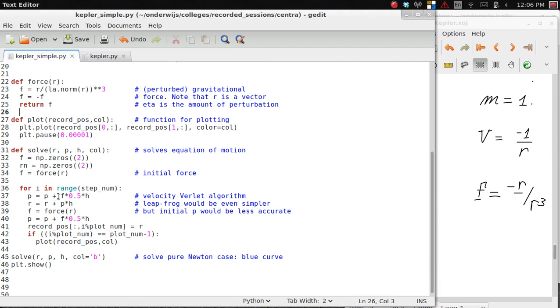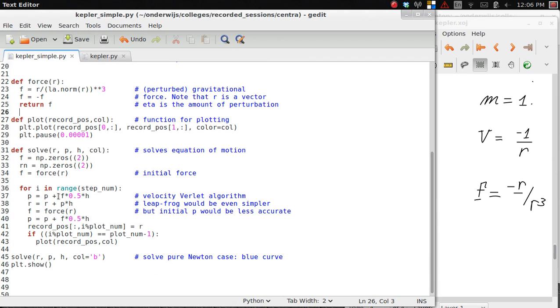Then the actual solution takes place in this part of the program, and it's done in the so-called velocity Verlet algorithm, which I will not go into in detail, but it's a very simple and accurate way of solving equations of motion. Of course, the part which really determines the shape of the orbit is this, the call to force. If I would change the force, I get a different motion. And so, it is interesting to see what we get from this program.